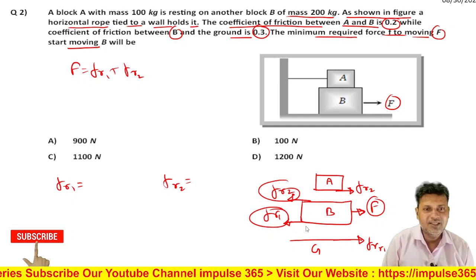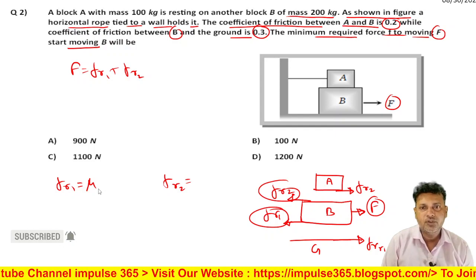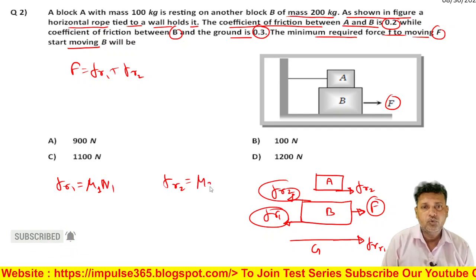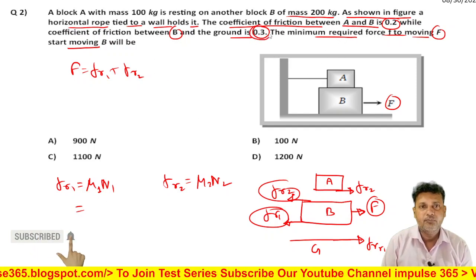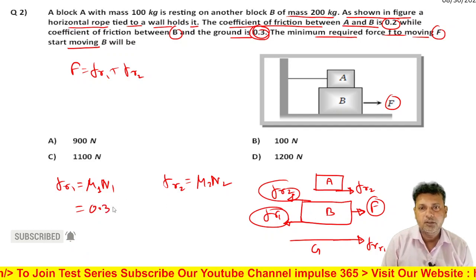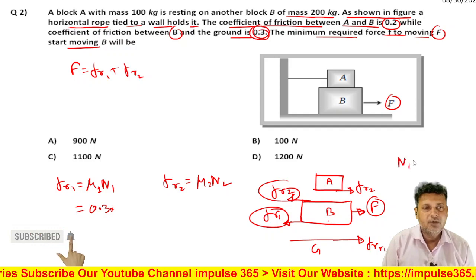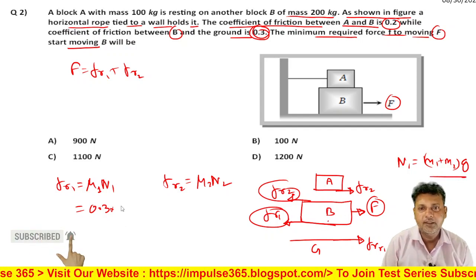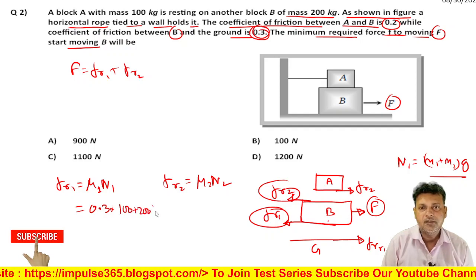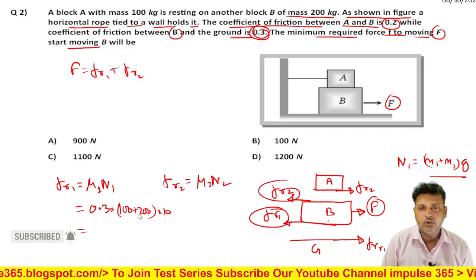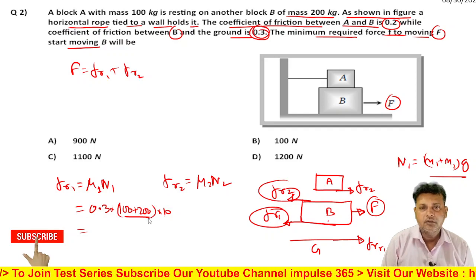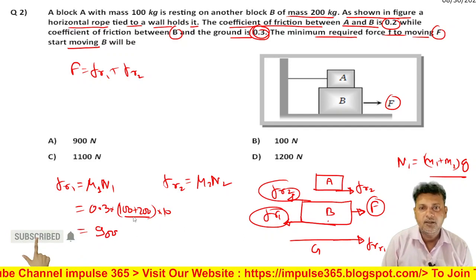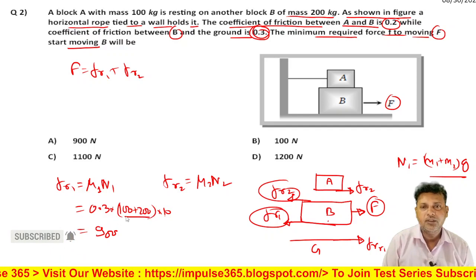FR1 की value क्या होगी? FR1 नीचे लग रहा है, तो ground और block के बीच में जो friction है, वो μ1 into N1। μ1 की value 0.3 है। Normal reaction N1 = (M1 + M2) × g = (100 + 200) × 10 = 300 × 10 = 3000 N। तो FR1 = 0.3 × 3000 = 900 N।